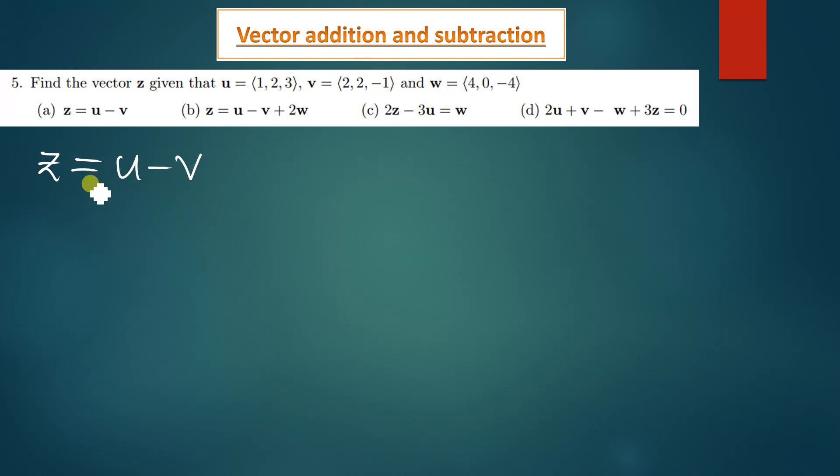So z is therefore going to be, u we've been given u to be 1 comma 2 comma 3, and then by subtracting it with v. So v is 2 comma 2 comma negative 1.